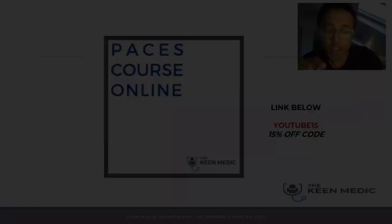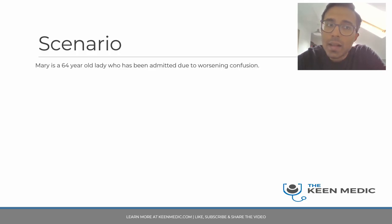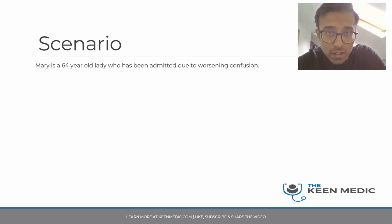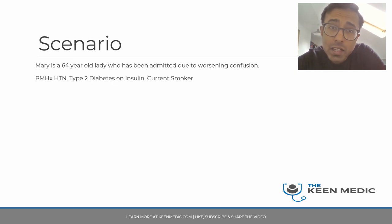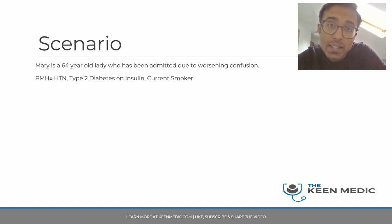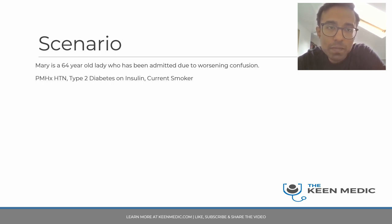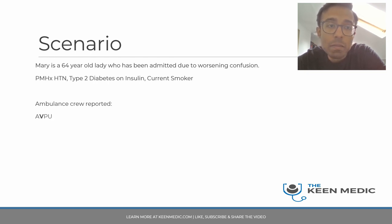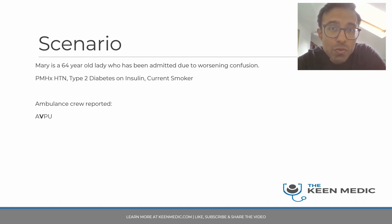The scenario: Mary is a 64-year-old lady admitted due to worsening confusion. Her past medical history includes hypertension and type 2 diabetes — she is on insulin for her diabetes — and she is a current smoker. With the ambulance crew, she was noted to be responsive to voice only, so not really alert properly.